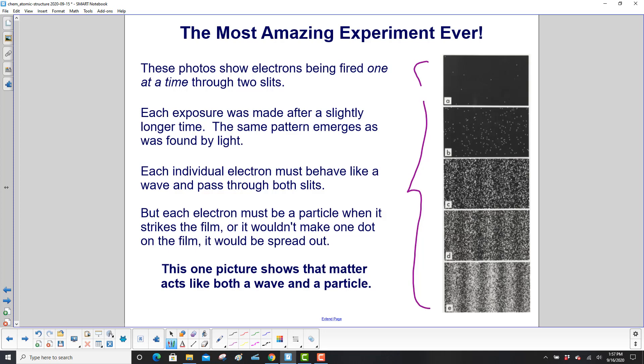But each electron must be a particle when it strikes the film or it wouldn't make one dot. See all these little dots here? And then they combine to form this pattern, which is just like if light was going through it. The one picture shows that matter acts like both a wave and a particle.